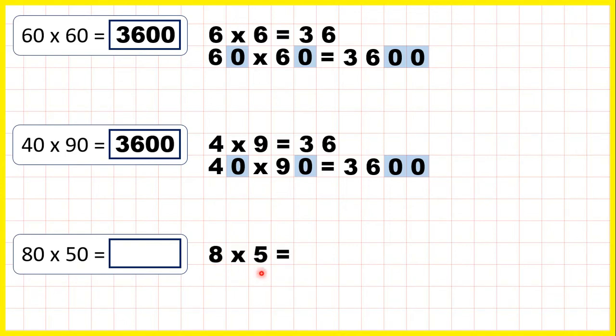We know that 8 times 5 is 40. So 80 times 50 is 4,000.